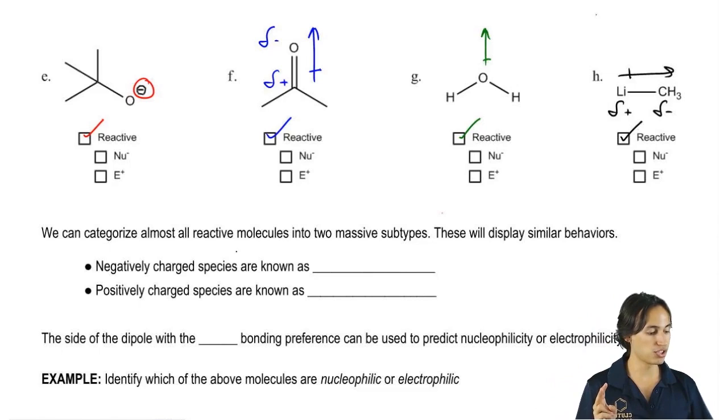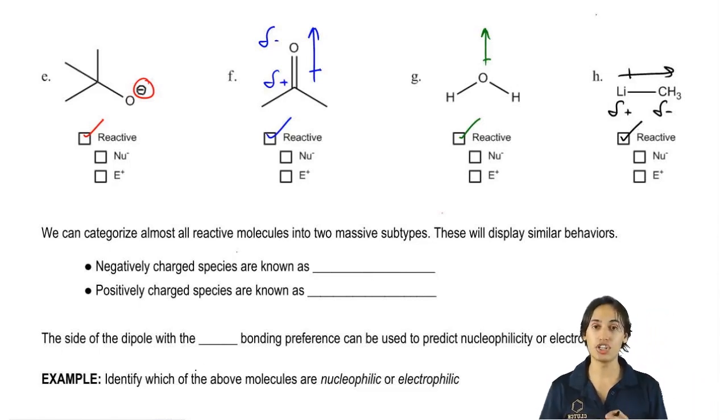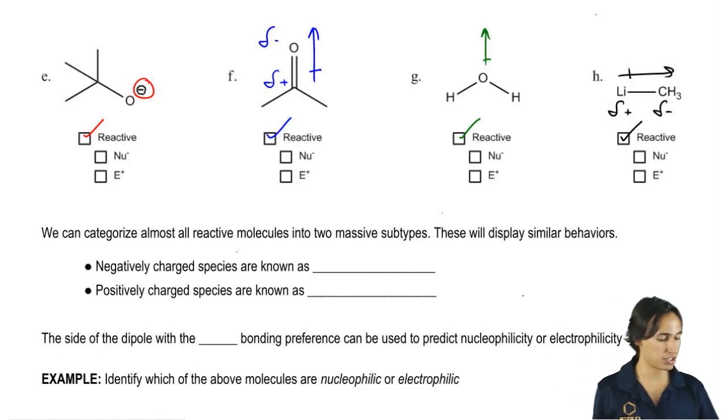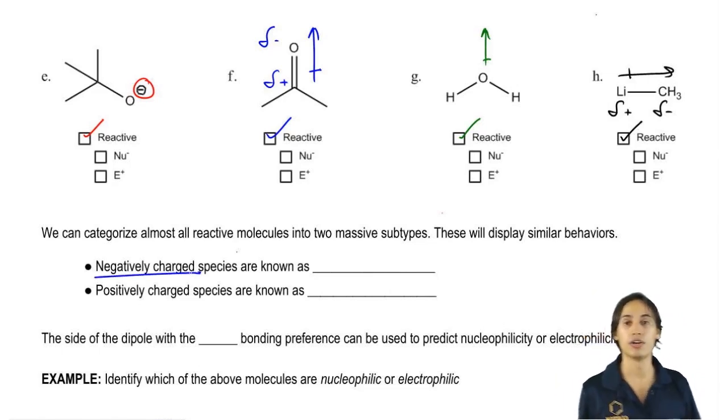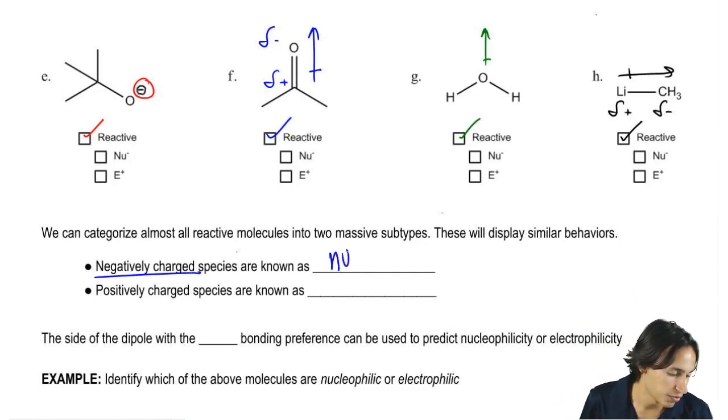And those two subtypes are basically negatively charged species and positively charged species. So a negatively charged species, I know you've heard these words before, but I'm just going to remind you of what they are. A negatively charged species is known as a nucleophile.